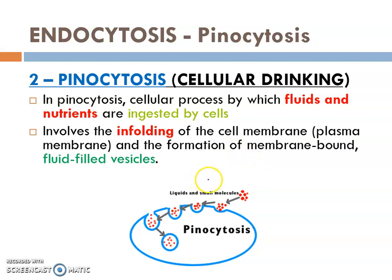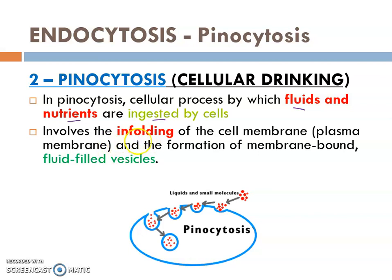Next we go to another type of endocytosis, which is pinocytosis. For pinocytosis, we can say in general it is cellular drinking. When we talk about drinking, it will involve fluids or liquids. Pinocytosis is in contrast to phagocytosis — it will involve fluids containing nutrients, solutes, or any soluble molecules that are going to be ingested, meaning taken into the cells. The process involves infolding of the cell membrane — the cell membrane folding inwards.